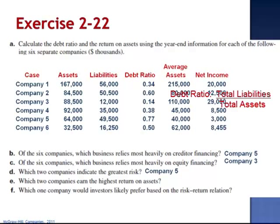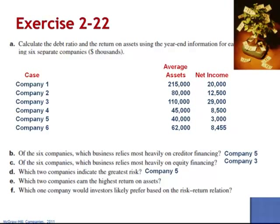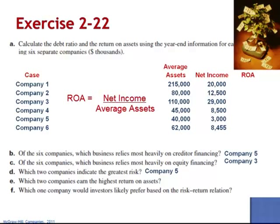Next, we're asked to calculate the return on assets. Return on assets measures how effectively the company takes its assets and converts them into net income. To calculate the return on assets, the numerator is net income and the denominator is average assets. For Company 1, $20,000 divided by $215,000 gives us 0.093.